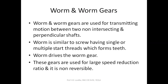In a worm and worm gear arrangement, the worm is similar to a screw which may have single or multiple start threads, forming a threaded cylindrical body. The worm basically drives the worm gear. The worm gear is the larger wheel; input is given to the worm and output is taken from the worm gear. These are used for large speed reduction ratios, such as 100:1, and the arrangement is non-reversible.